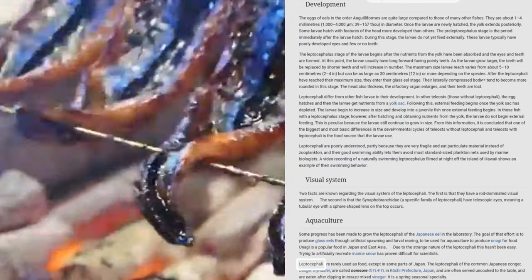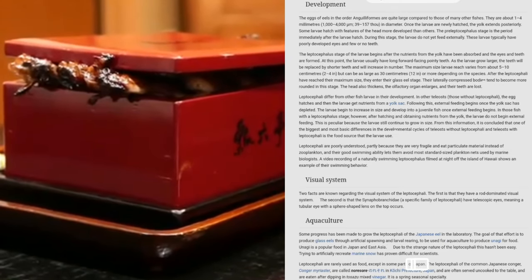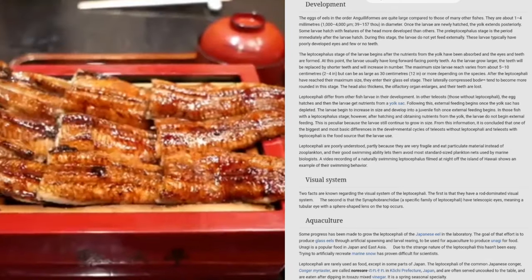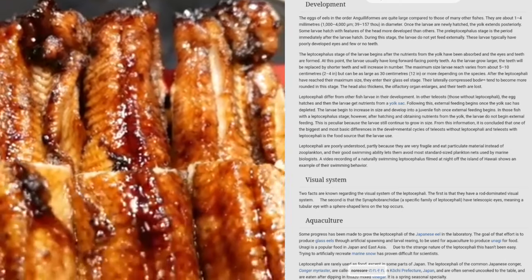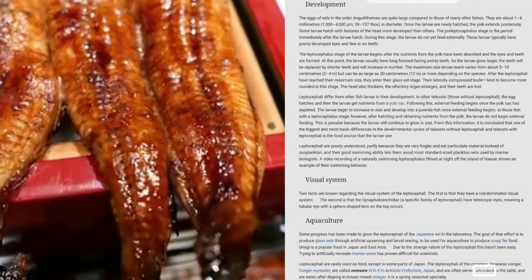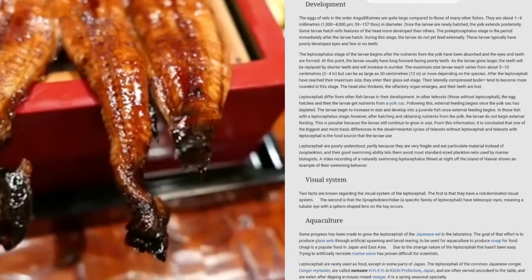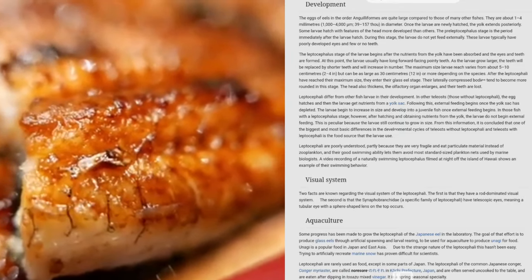Leptocephali are rarely used as food except in some parts of Japan. The leptocephali of the common Japanese conger, Conger myriaster, are called nore-zore in Kochi Prefecture, Japan, and are often served uncooked to the table and are eaten after dipping in tosuzu mixed vinegar. It is a spring seasonal specialty.